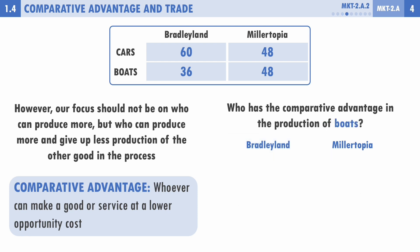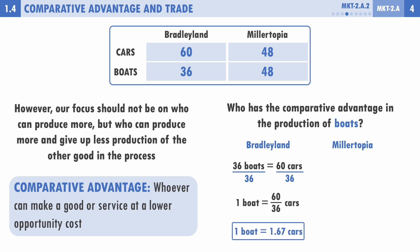Who has the comparative advantage in boats? For Bradley Land, 36 boats equals 60 cars. Dividing both sides by 36 to find the cost of one boat gives us 60/36 cars, which simplifies to 1.67 cars — or one and two-thirds cars. Every time Bradley Land wants to produce one more boat, they must stop producing 1.67 cars. That is their opportunity cost.